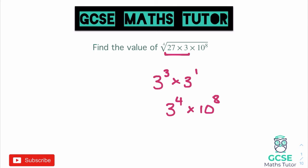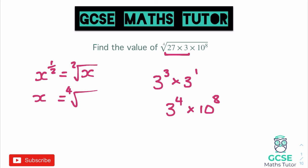So we need to think about that fourth root and how we could actually apply something a little different for writing it. We should already know that x to the power of a half is the same as the square root of x. Since we're looking at a fourth root here, we could think about x to the power of a quarter, which finds the fourth root. So instead we write this all to the power of a quarter, and then think about how we apply this to the powers.